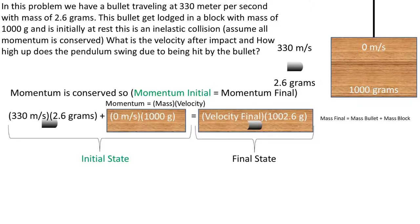Looking at our problem, we have a bullet with a velocity of 330 meters per second and mass of 2.6 grams being added to the momentum of the block with a zero meters per second velocity and a mass of 1,000 grams. These two momentums added together equal the final state, which is the final velocity, times the combined mass of the bullet and block, which is 1,002.6 grams. This represents when the bullet and block are fused together.